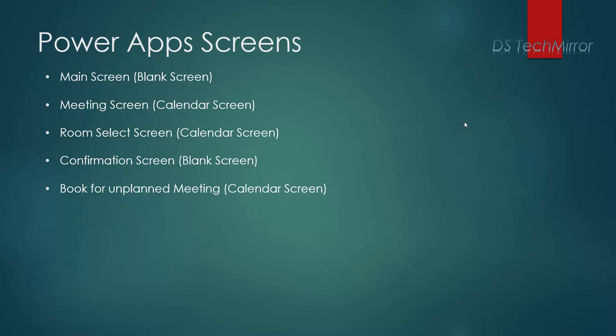Using this app you can book rooms for a planned meeting and for an unplanned meeting as well. In the first screen, the Main Screen, there will be two buttons: one to book a room for a planned meeting and another for an unplanned meeting. The screen type will be blank. The second screen, the Meeting Screen, will be a calendar screen where we'll see all meetings for a selected day. The third screen shows available rooms for that duration. The fourth is the confirmation screen and the fifth is for booking an unplanned meeting.